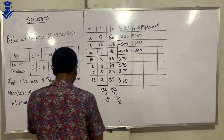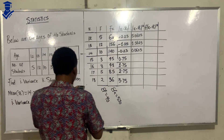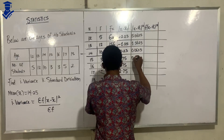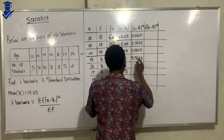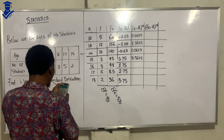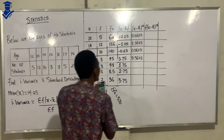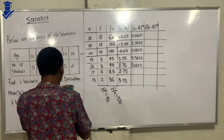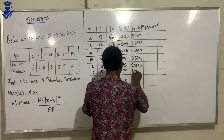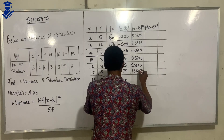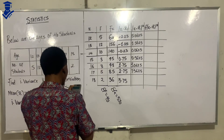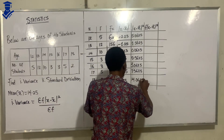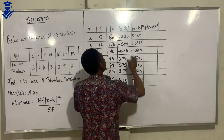Continuing the squaring: 0.75 squared gives 0.5625. Then 1.75 squared gives 3.0625. Next, 2.75 squared gives 7.5625. And finally 3.75 squared gives 14.0625. So those are all the values for the x minus x̄ squared column.